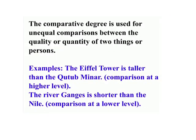The comparative degree is used for unequal comparisons between the quality or quantity of two things or persons. Examples: 'The Eiffel Tower is taller than the Club Minna' — comparison at a higher level. 'The River Ganges is shorter than the Nile' — comparison at a lower level.